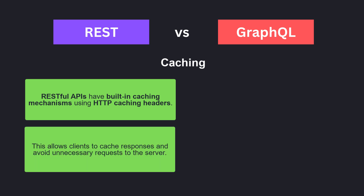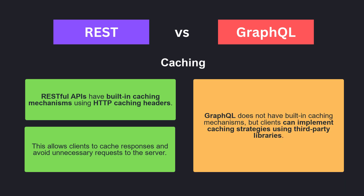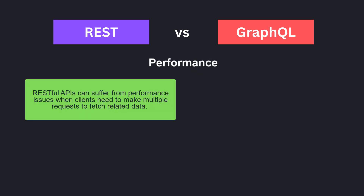RESTful APIs have built-in caching mechanisms using HTTP caching headers, which allows clients to cache responses and avoid unnecessary requests to the server. GraphQL does not have built-in caching mechanisms, but clients can implement caching strategies using third-party libraries.